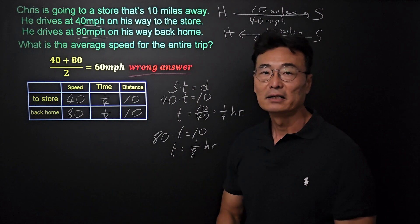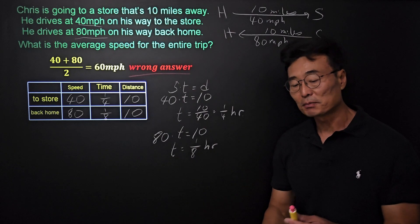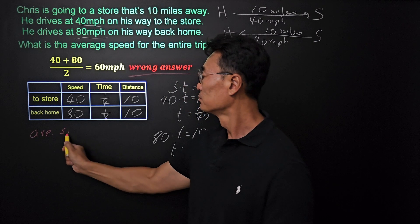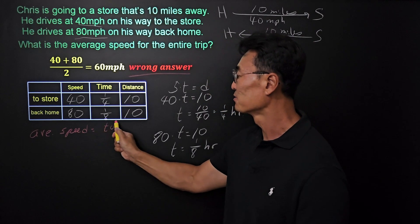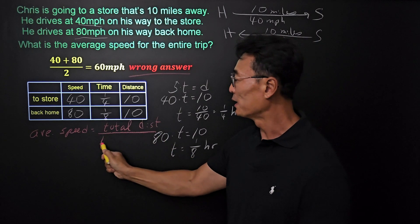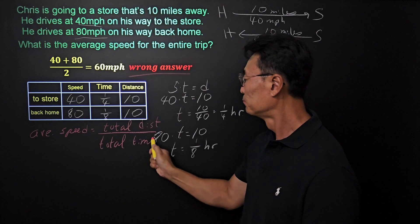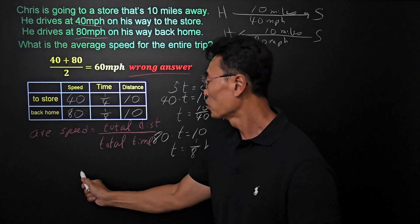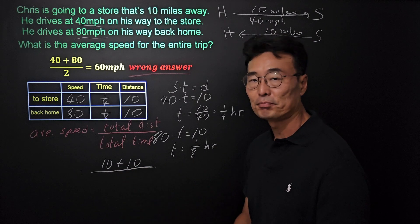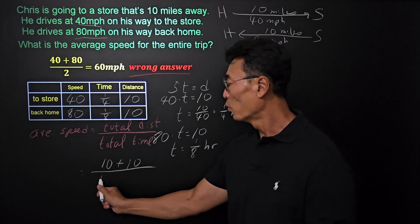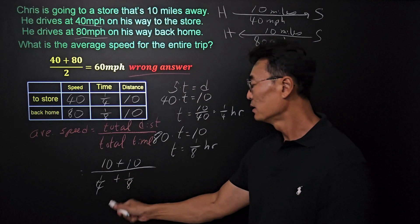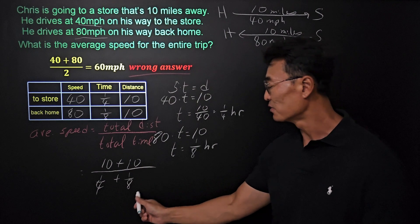Now, how do we find the actual average speed for the entire trip? The formula is: average speed equals total distance over total time. The total distance is 10 miles to the store plus 10 miles back home. The total time is 1/4 hour going to the store plus 1/8 hour coming back.